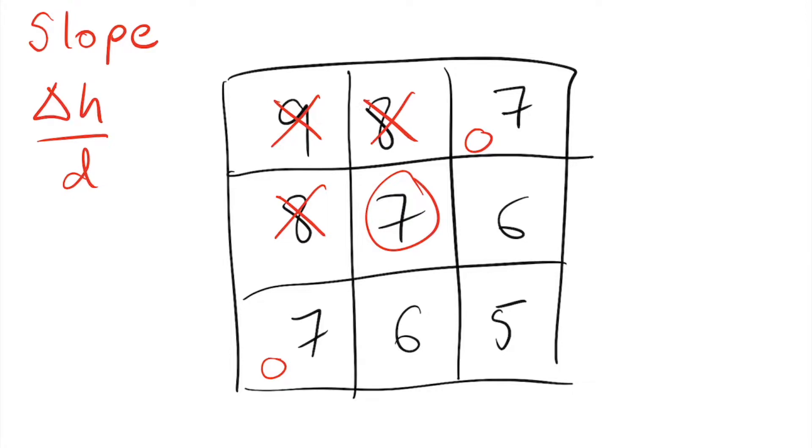Now, for its two neighbors with an elevation of 6, if we assume that the distance between the centers of the cells is 1, then the downward slope is given by 7 minus 6 divided by 1, and so the result is 1.